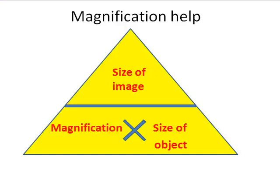Hello there. This is a screencast on magnification for AS Biology Year 12. We start off with the calculation triangle: size of image, size of object, magnification. You'll always get two out of the three, and you've got to find the third one.